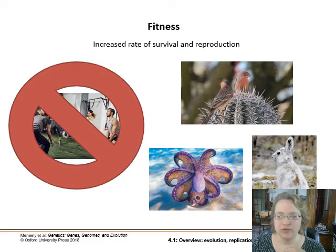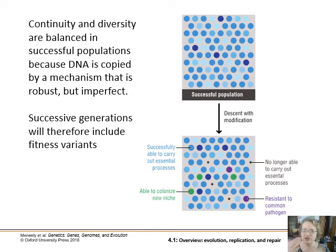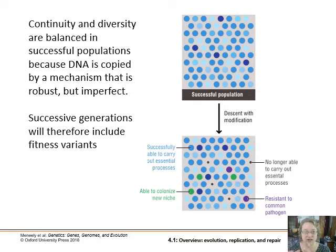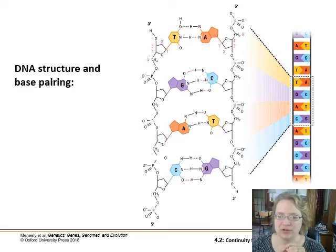In a successful population you have a balance of accumulating interesting changes while not accumulating too many bad changes. Successive generations will have more variants, some of which could be adapted for colonizing a new niche or resisting a pathogen. Too much variation and everything goes haywire; not enough variation and you stagnate, unable to adapt to a changing environment or a new disease. This all comes down to DNA — the structure of DNA is what really allows it to be replicated and passed on.